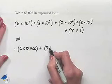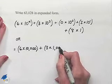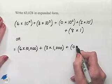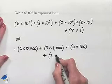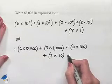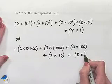3 times 1,000, plus 0 times 100, plus 2 times 10, plus 8 times one.